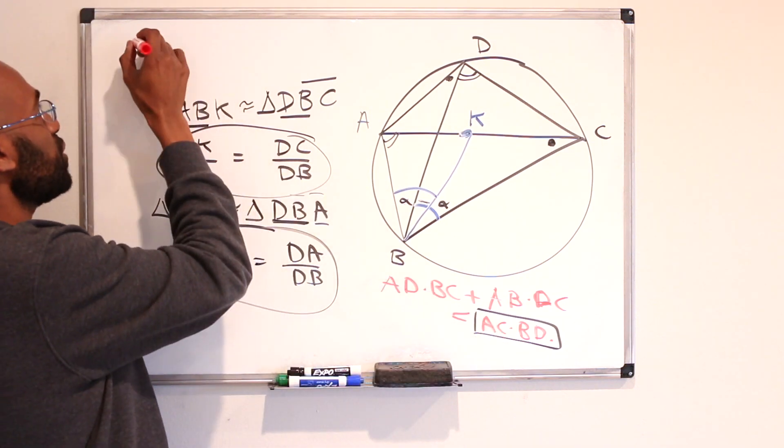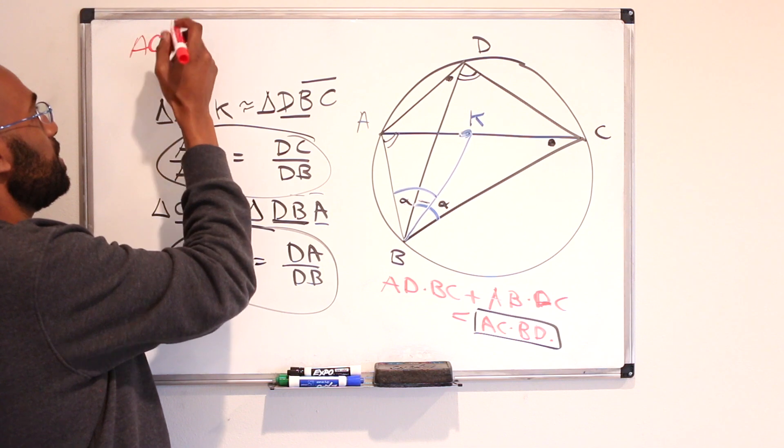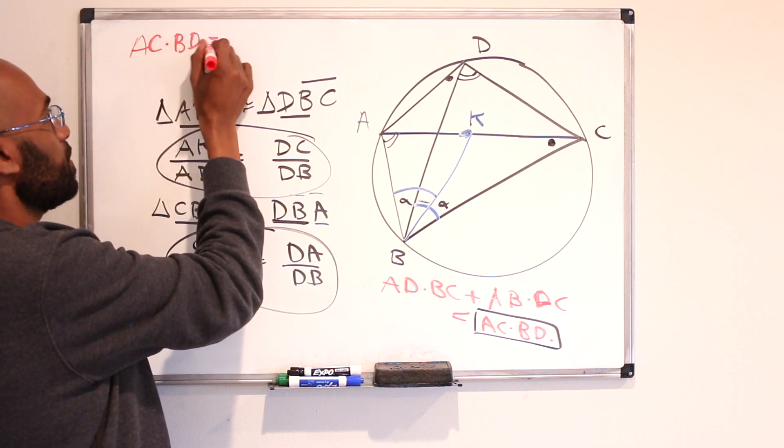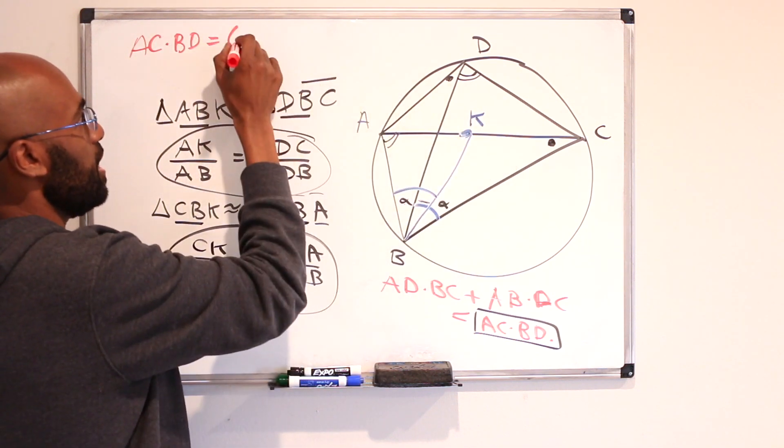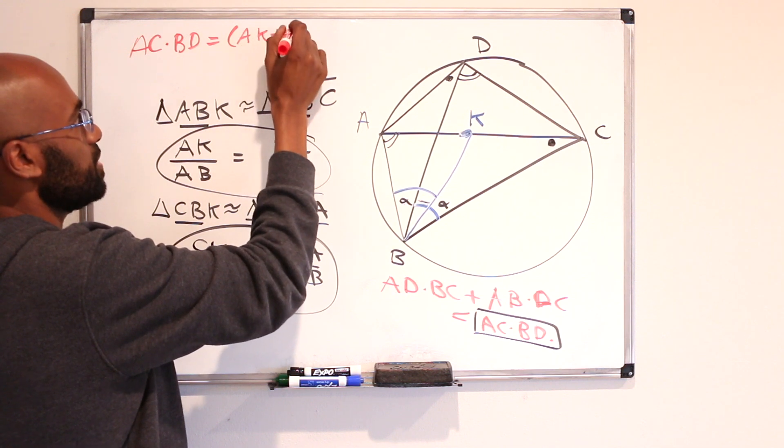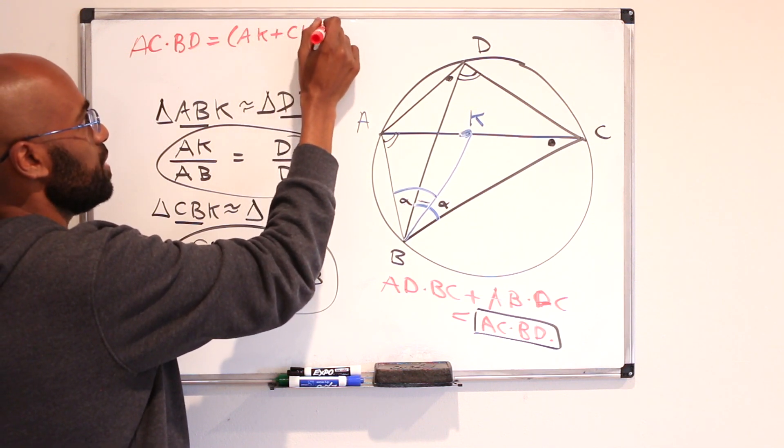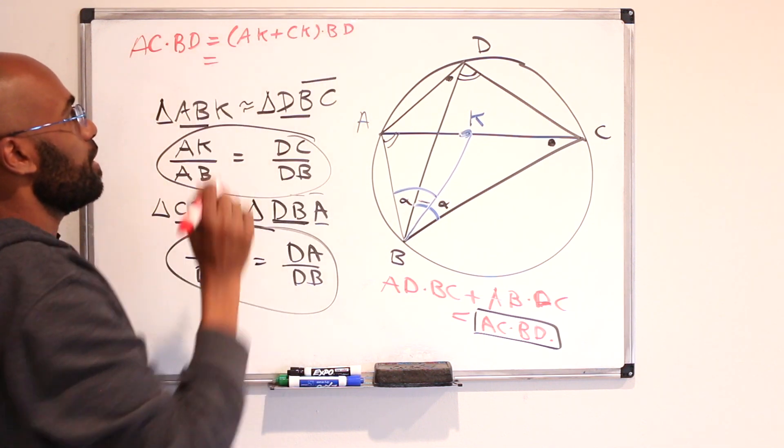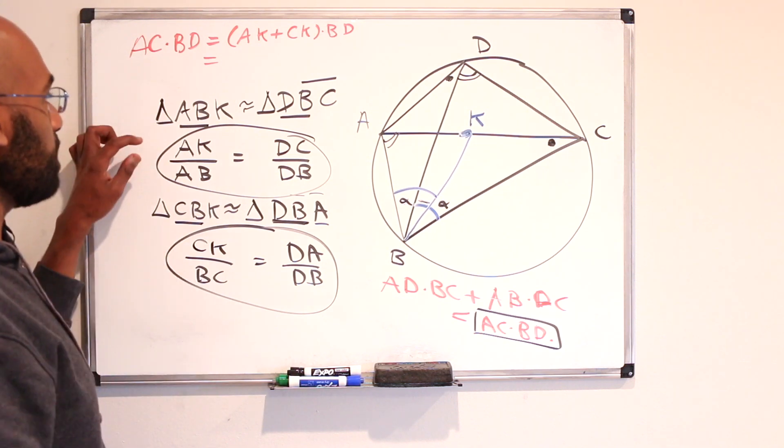So if you look at this expression AC times BD that's the same as AK plus CK times BD. Let's look at AK times BD. AK times BD is AB times DC.